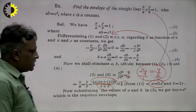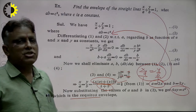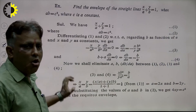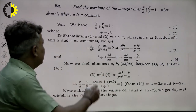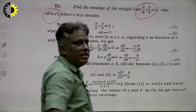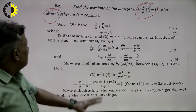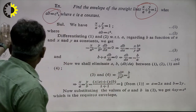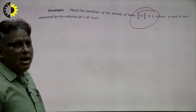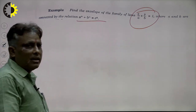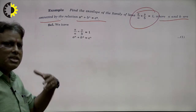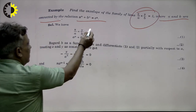So in this way, the method is always unique. First calculate dB/dA using the connected relationship, then from the given curve also calculate dB/dA, and set them equal. From both equations find values of A and B, and substitute into the given relationship (not the curve) to get the envelope. Students keep this in mind.